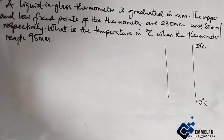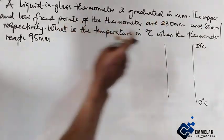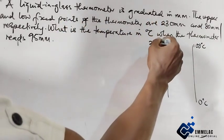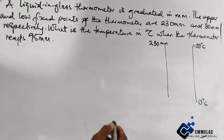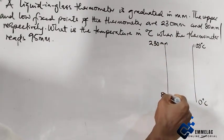But for this liquid-in-glass thermometer, we are told that the upper fixed point is 230 millimeters and the lower fixed point is 80 millimeters.